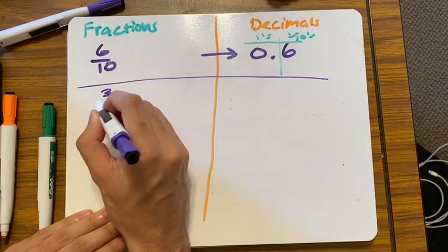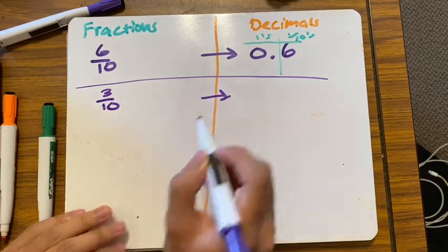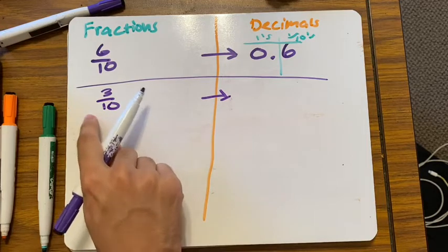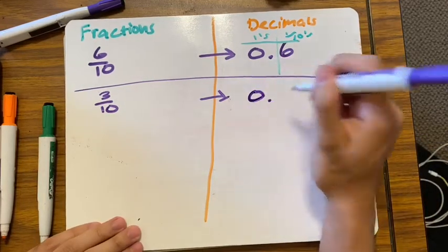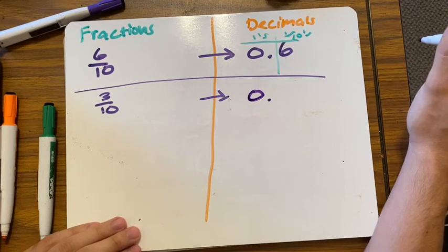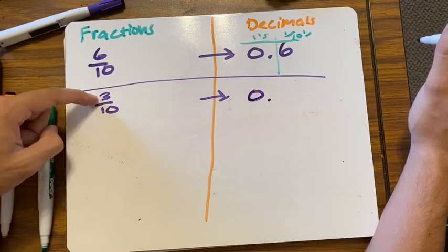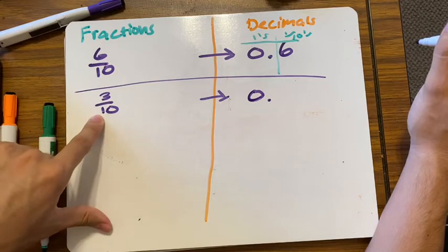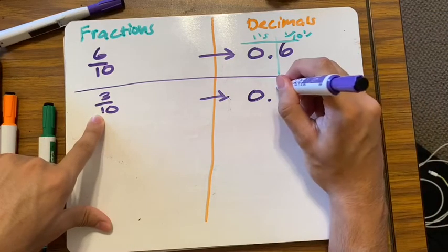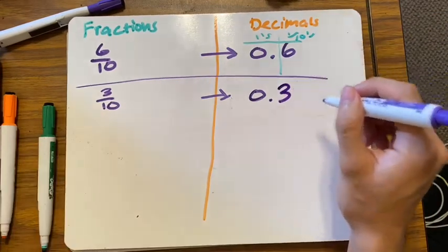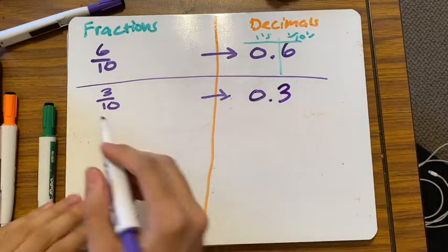Three tenths — do you have a whole number? No, so we put zero. Your three is in the tenths place, so the answer is 0.3.